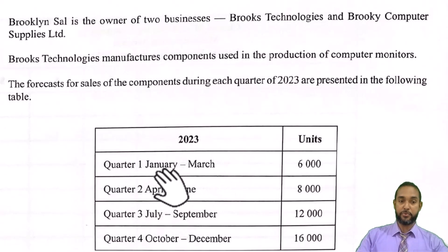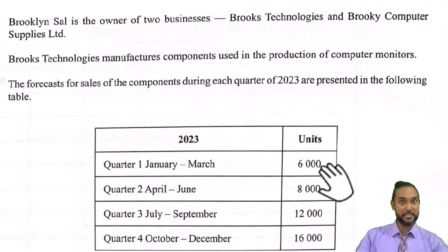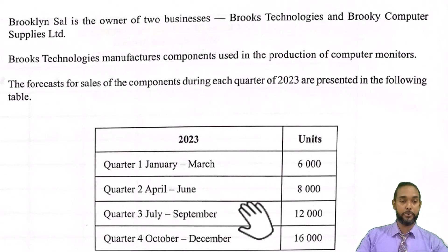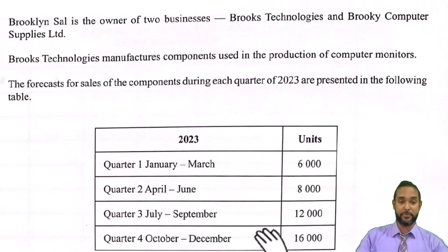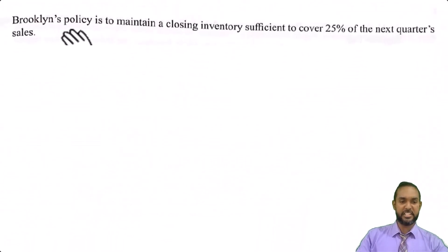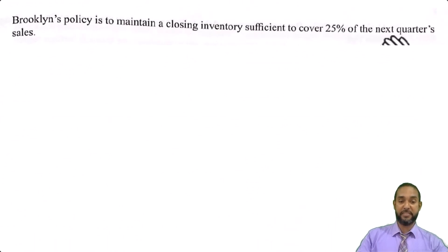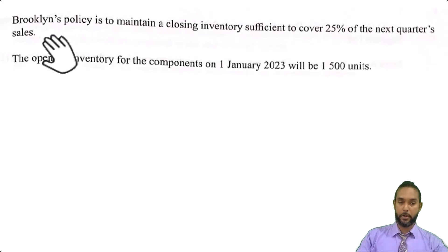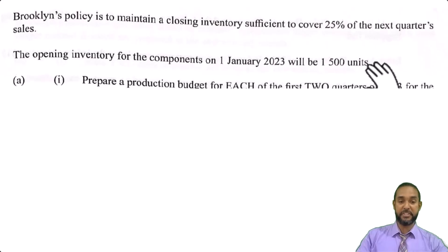Your first quarter runs from January to March — they plan to sell 6,000 units. In quarter two, which goes April, May and June, they plan to sell 8,000. Quarter three, July, August, September, they plan to sell 12,000. And in the last quarter, October, November, December, they plan to sell 16,000. Brooklyn's policy is to maintain a closing inventory sufficient to cover 25% of next quarter's sales. The opening inventory for the components on 1 Jan 2023 will be 1,500 units.